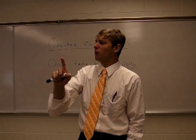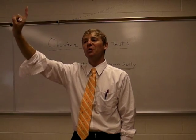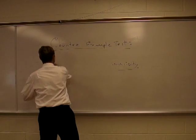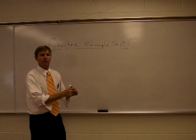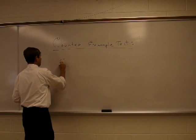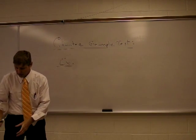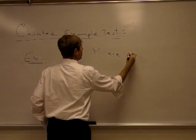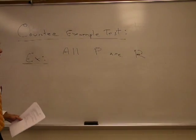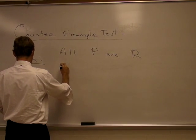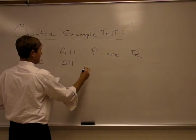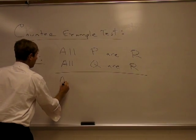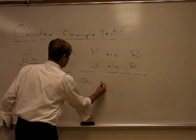If true premises are put in and a false conclusion is spit out, you only need one case to show that it's invalid. So let's go back to an example of the counter-example test. We're going to need a syllogism. All P are R, all Q are R, therefore all Q are P.